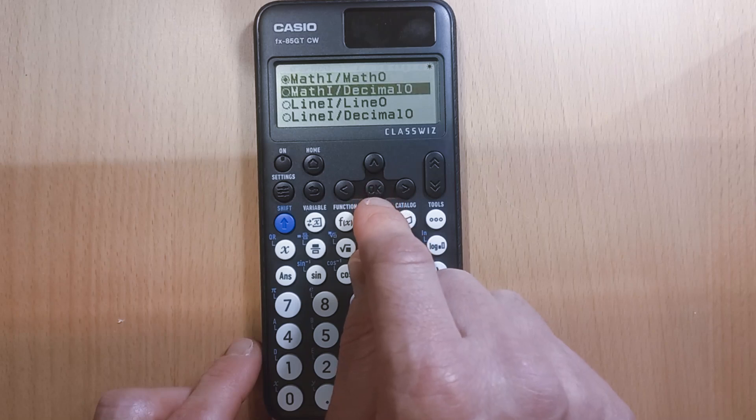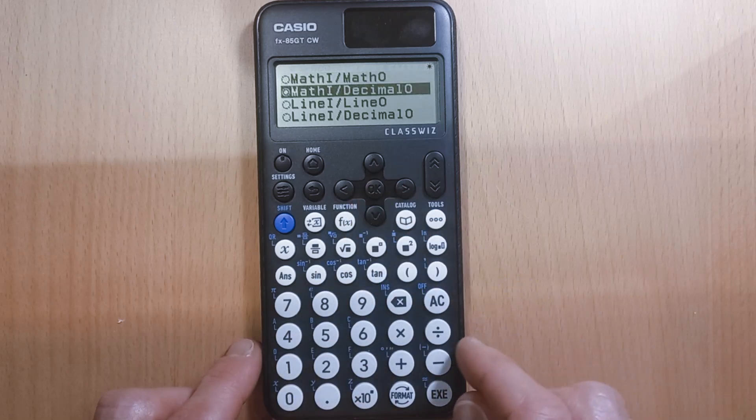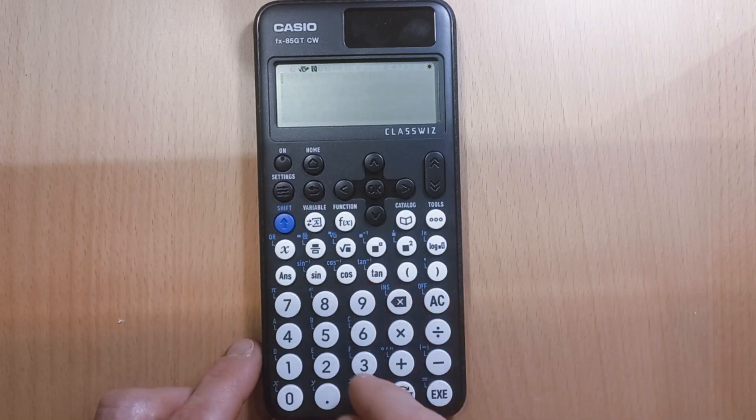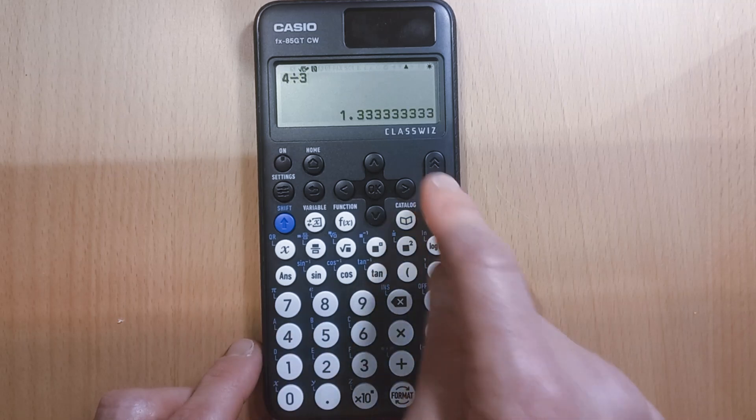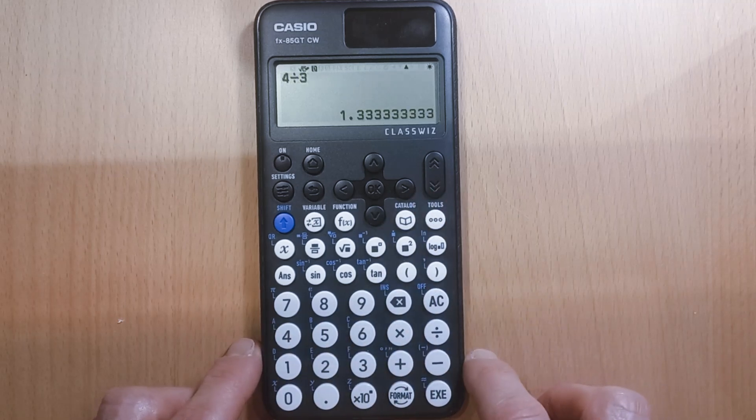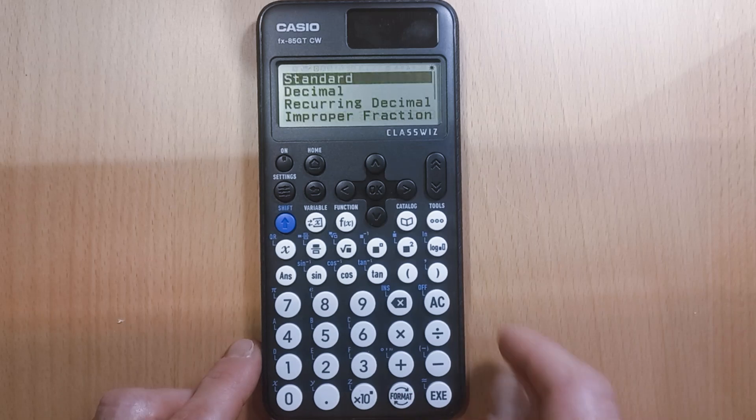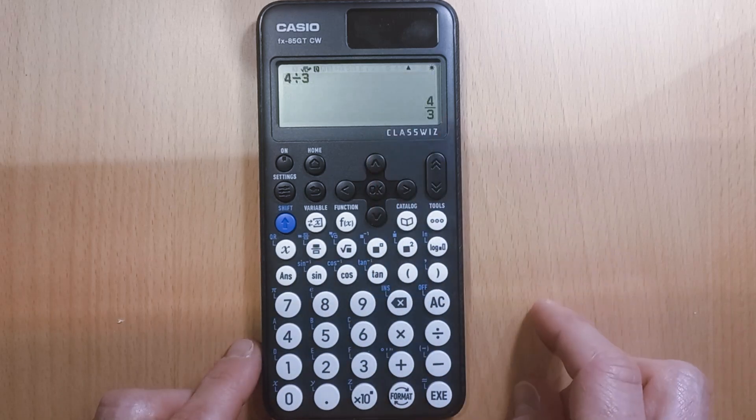So go down to the second one, click OK, and now if we clear that and do the same thing—4 divided by 3—it's now showing as a decimal. But you've still got the option to click on format, make it standard, and it'll come up as a fraction.